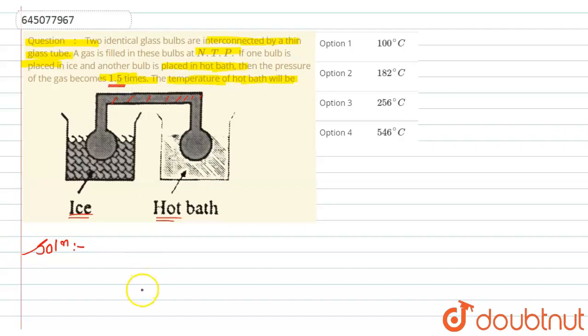After placing it into the bath, the pressure of gas becomes 1.5 times. Now if we concentrate on the question, we can say that the quantity of gas in these bulbs is constant. That means initial number of moles in both bulbs will be equal to final number of moles in both bulbs.